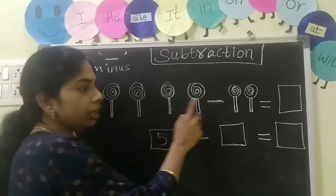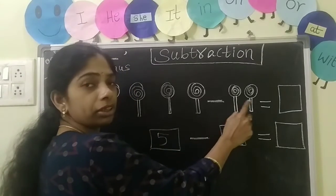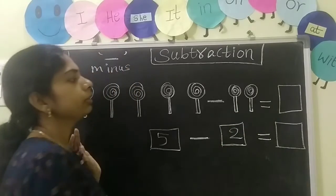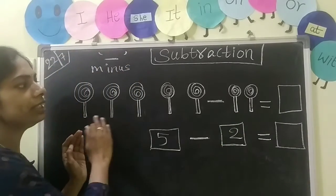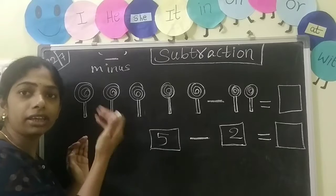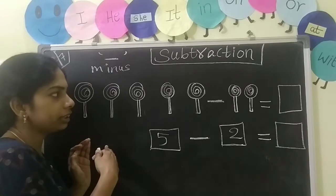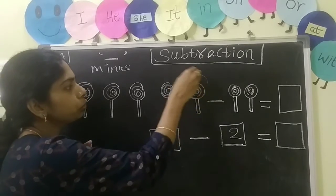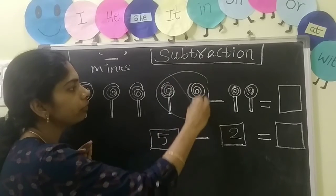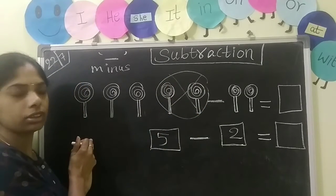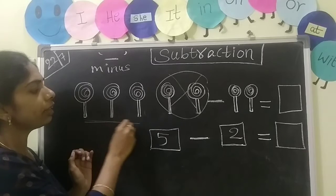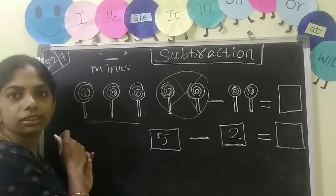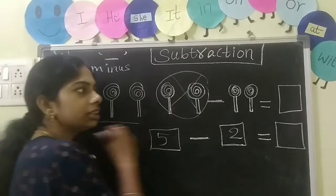5 minus how many? In these 5 candies I ate 2 candies. So 1, 2 — we have to strike out 2 candies. How many candies are left? 1, 2, 3. How many are left? 3.